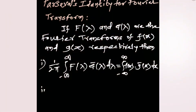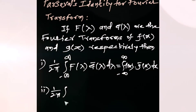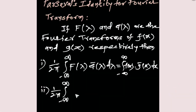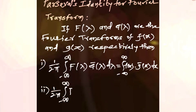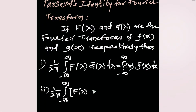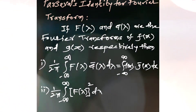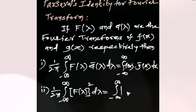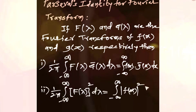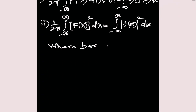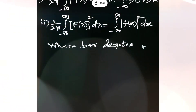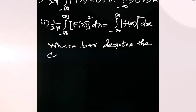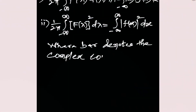Second result: (1/2π) times the integral from minus infinity to plus infinity of |F(lambda)|² d-lambda equals the integral from minus infinity to plus infinity of |f(x)|² dx, where bar denotes the complex conjugate. Watch the video up to the end for better and clear understanding.